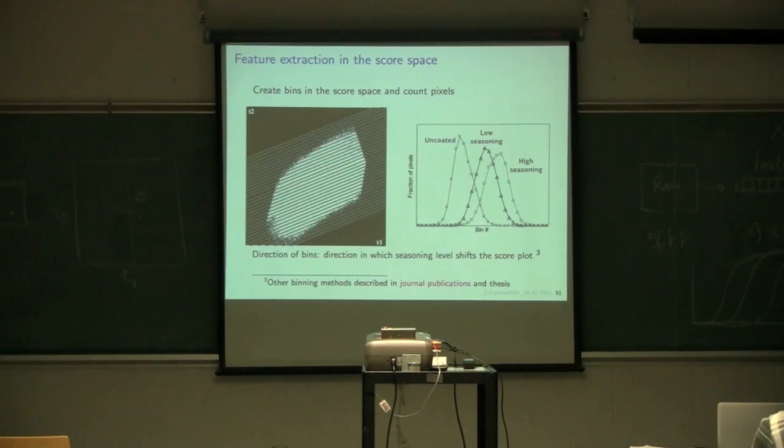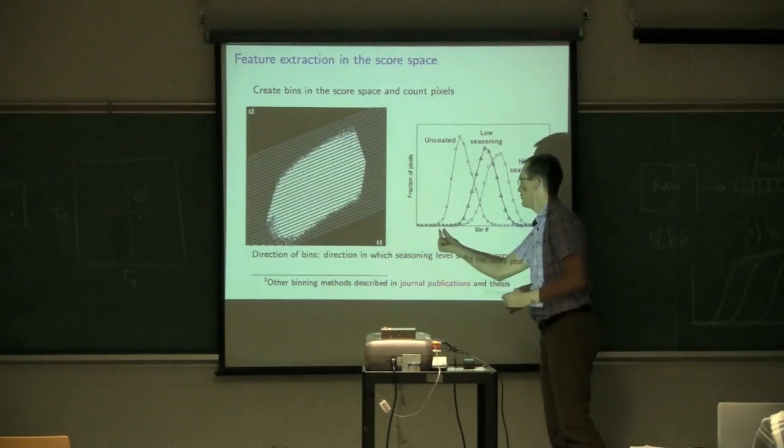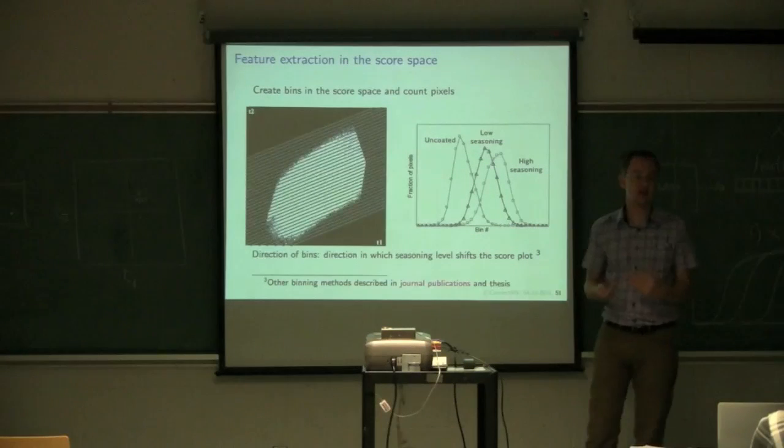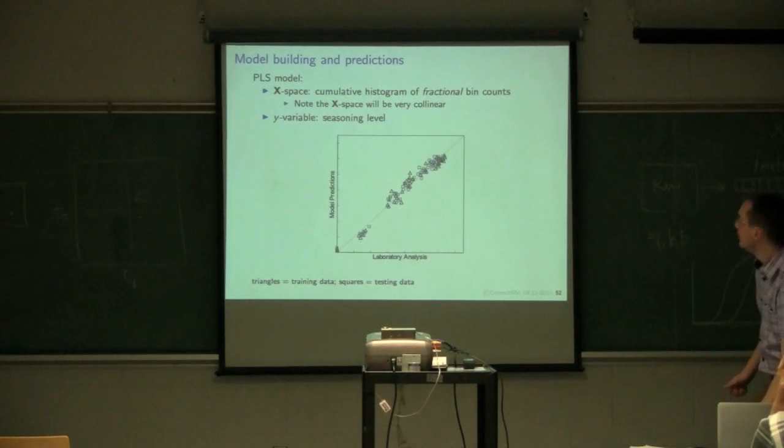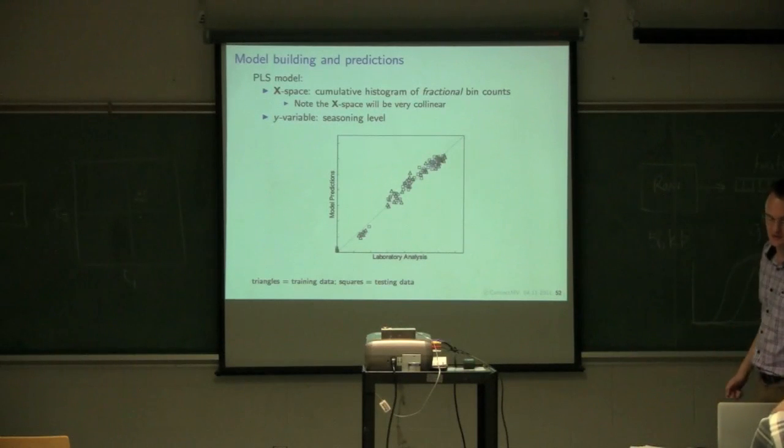Now, as expected, these 32 columns in your x-matrix are extremely collinear because the count from one bin to the neighboring bin is going to be extremely similar. So extremely collinear x-space. You've got no hope of getting a good predictive model from those features using multiple linear regression. So you have to use a tool that handles the collinearity in x-space, which is PLS in this particular instance.